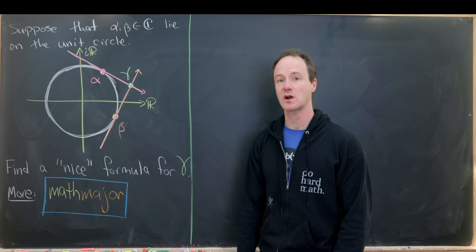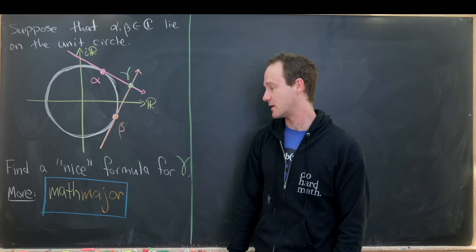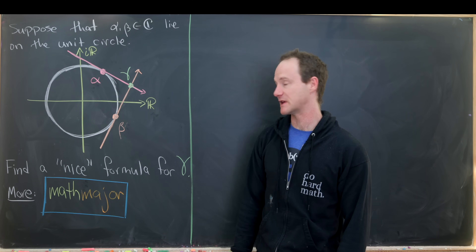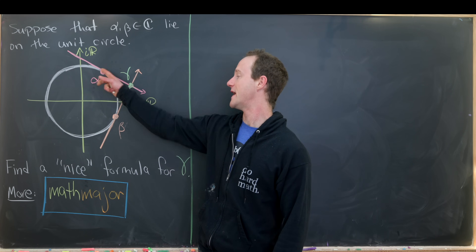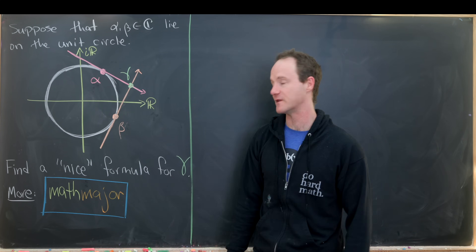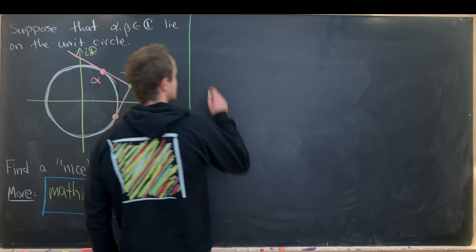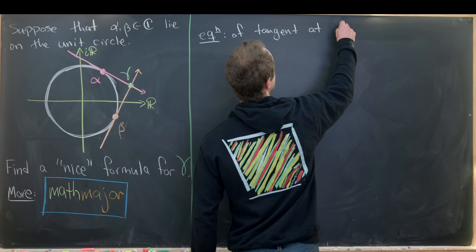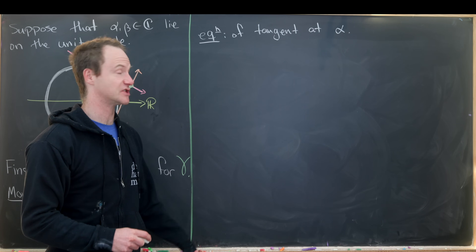If you'd like to see more complex analysis, although this is more like complex arithmetic with geometry, check out my second channel Math Major where I'm building an entire course in complex analysis. The first thing we'd like to do is find an equation for each of these tangent lines. If we find an equation for the tangent line at alpha, we immediately have one for beta just by replacing alpha with beta.